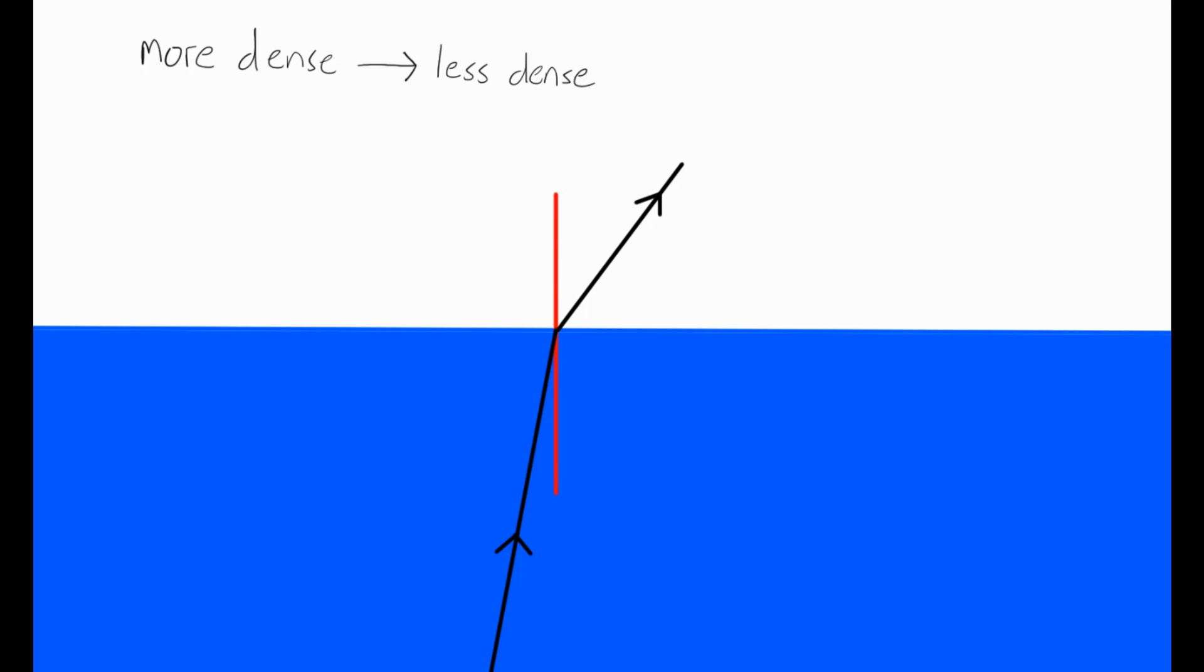The first thing to be clear about is that when we're talking about the critical angle, we're always talking about light moving from a more dense substance to a less dense substance. So if you look at the diagram here, we've got a more dense substance at the bottom here. That could be water, it could be glass. And the light is moving from this medium into a less dense medium, for example, air.